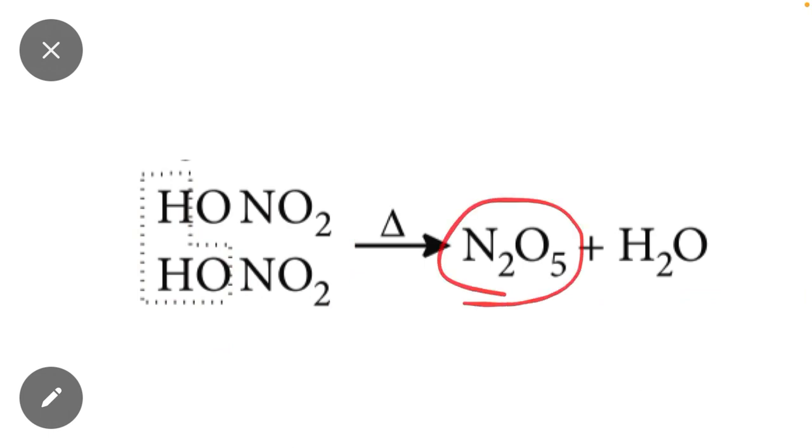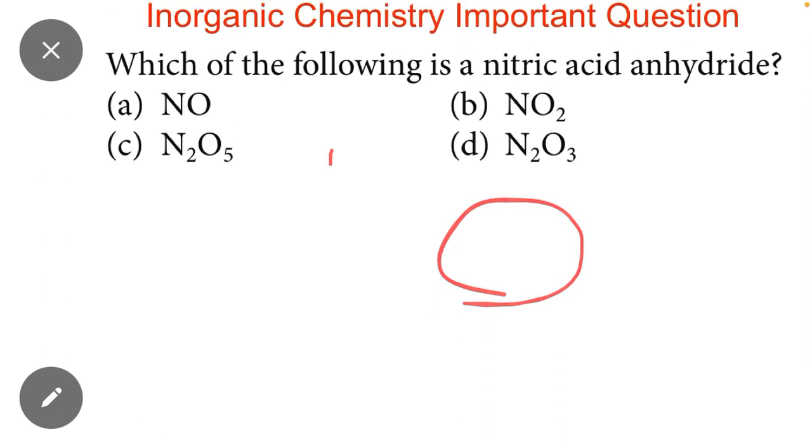So we check the options which are given in the question. As you can see, option C is N2O5. It means N2O5 is a nitric acid anhydride. I hope that all the students understand this concept.